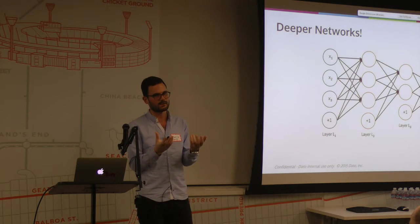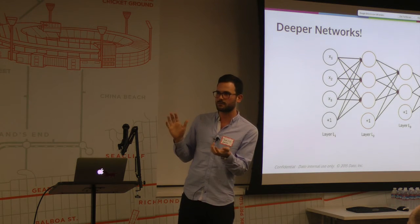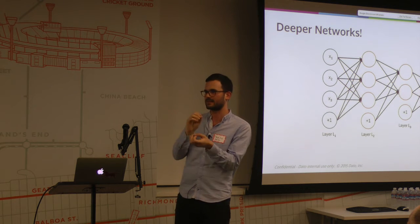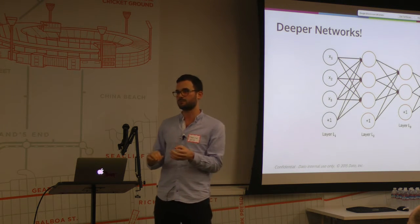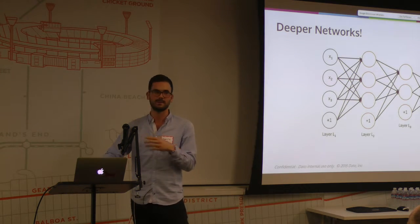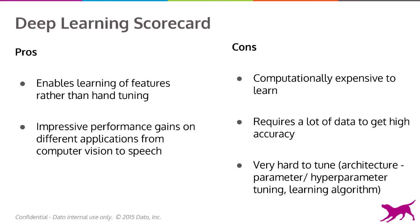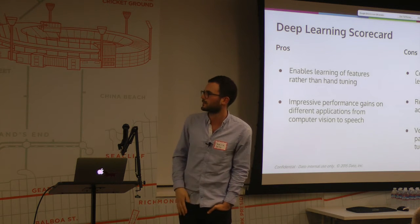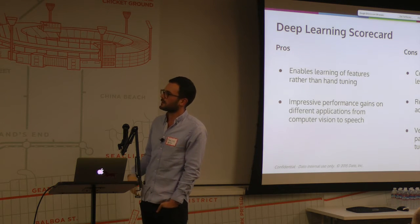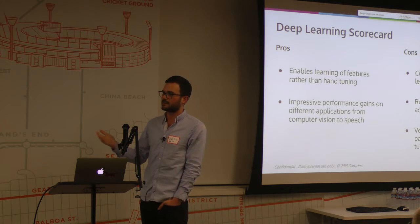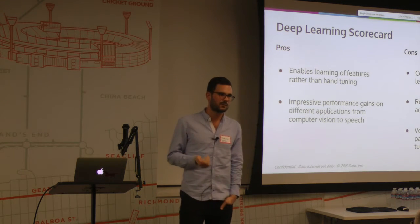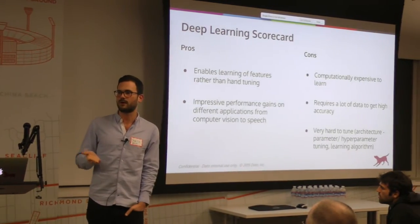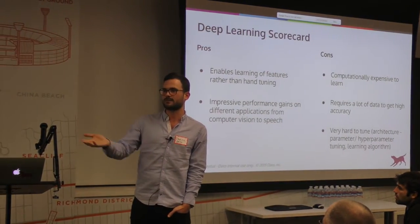Convolutional networks, which are commonly used in image problems, are a bit more specific — the layers are more engineered and have more specific properties. Deep learning lets us learn all these complex features rather than sitting and engineering them by hand, and it has shown some really impressive gains recently. The problem is it's really expensive to train. Google open-sourced TensorFlow, but Google has the richest data in the world — that's where their advantage lies. It requires a lot of data and is very computationally expensive. Also, it's very hard to tune a convolutional network successfully.